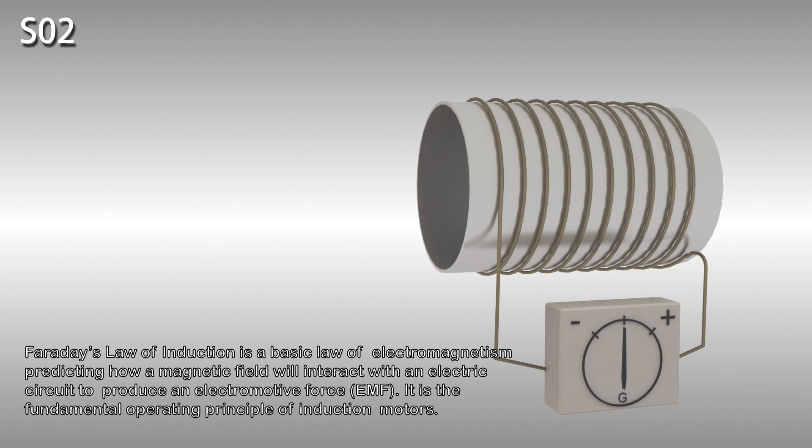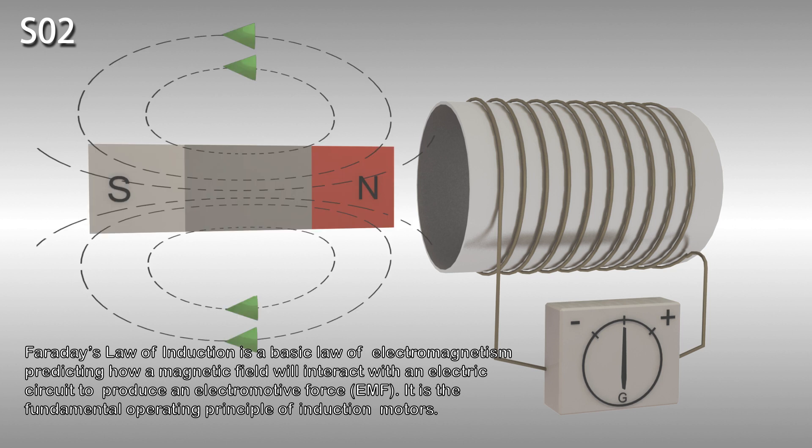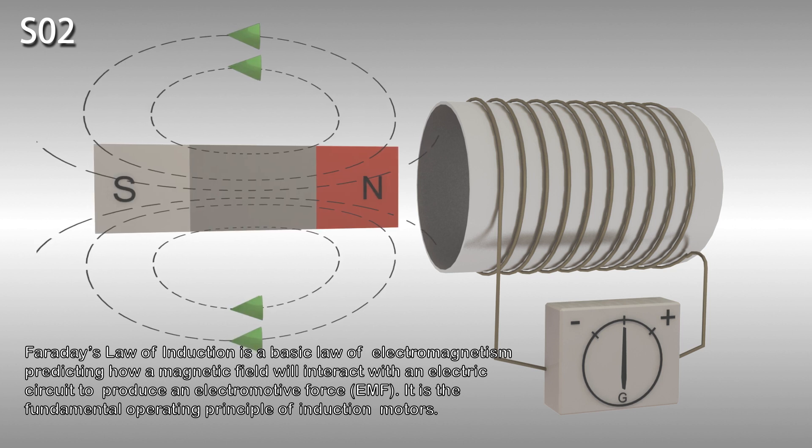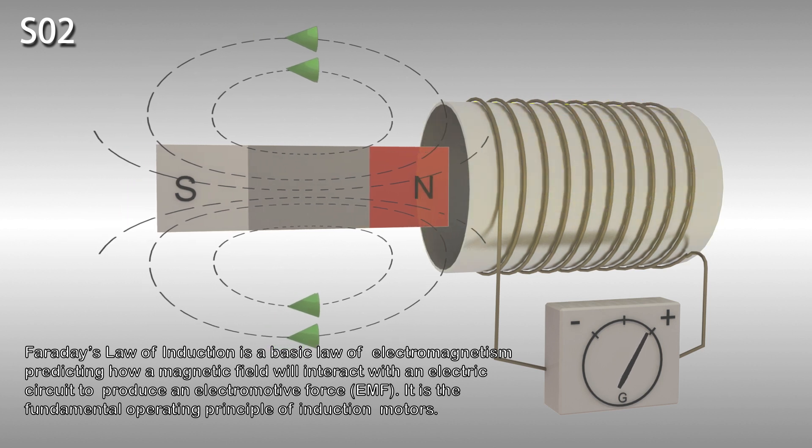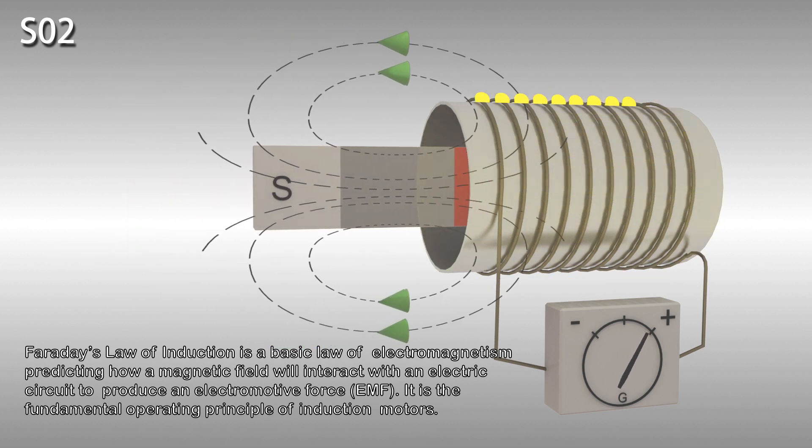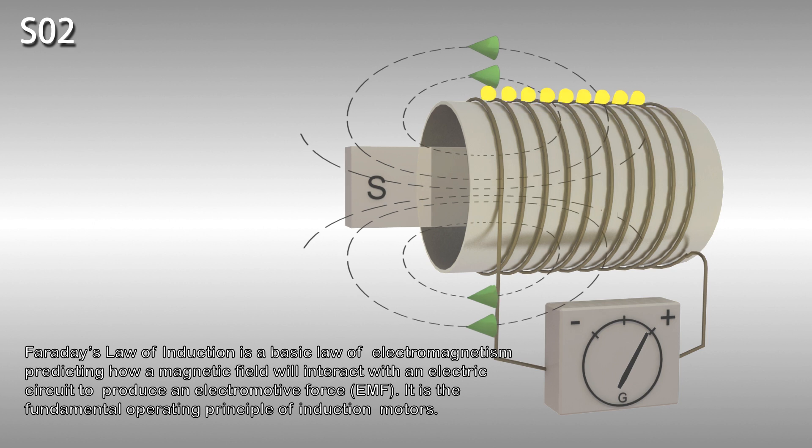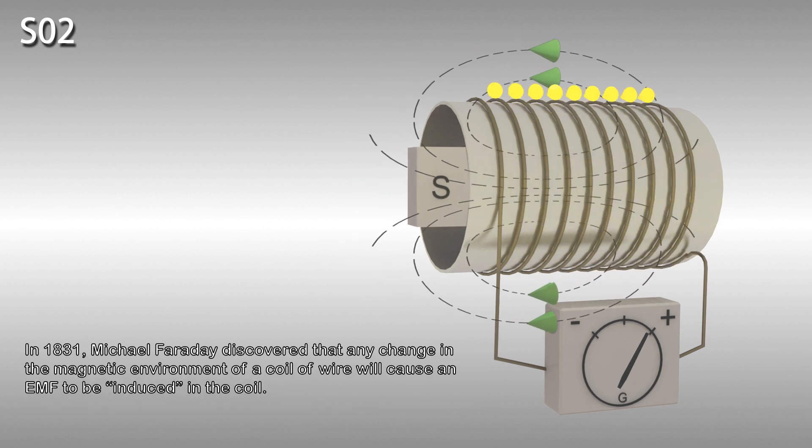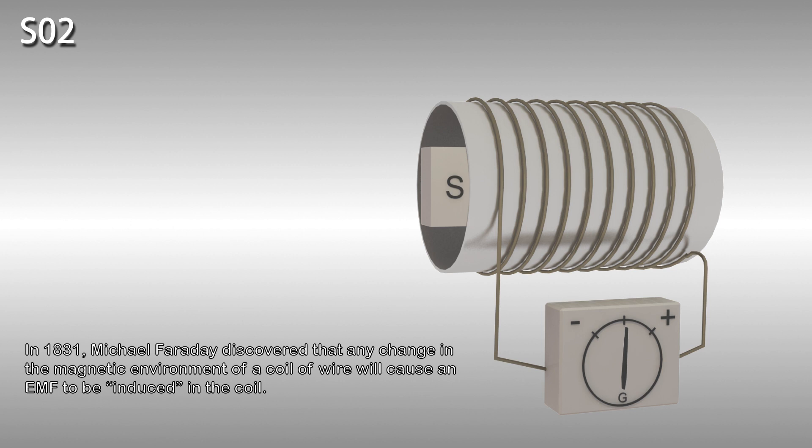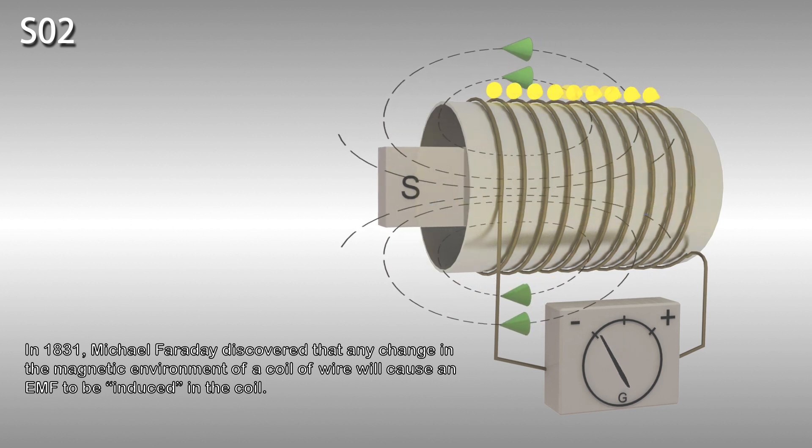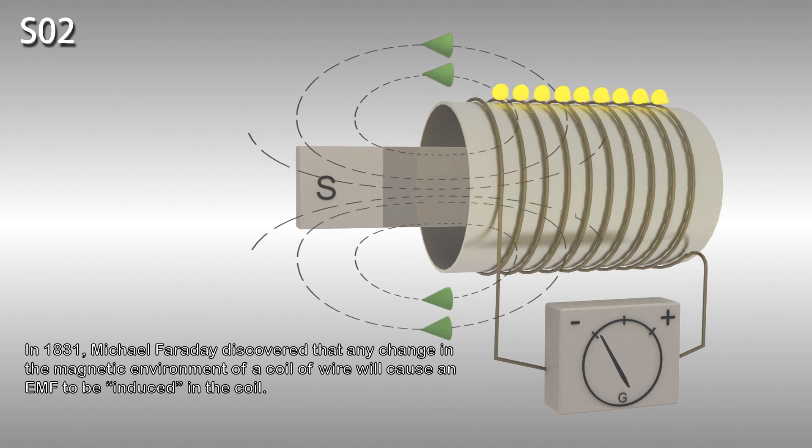Faraday's law of induction is a basic law of electromagnetism and predicts how a magnetic field will interact with an electric circuit to produce an electromotive force or EMF. It is the fundamental operating principle of induction motors. In 1831, Michael Faraday discovered that any change in the magnetic environment of a coil of wire will cause an EMF to be induced in the coil.